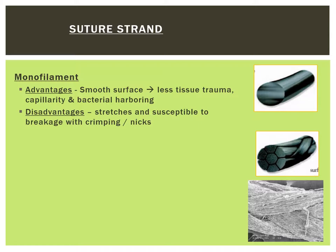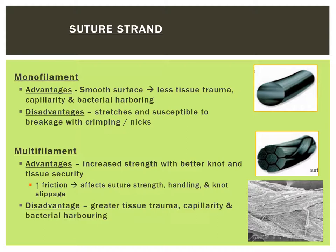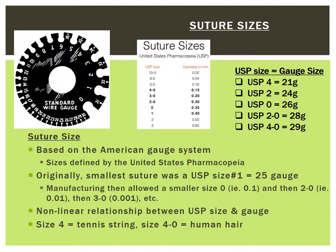The last consideration is stranding. Monofilaments are less traumatic and less likely to harbor bacteria because of their smooth surfaces. On the other hand, multifilaments are braided sutures — they have better strength and less susceptibility to breakage with small nicks or crimping. However, braided sutures are more likely to harbor bacteria. As a general rule, you can remember that a size 4 suture is like a tennis string, while a size 4-0 suture is the size of a strand of hair.